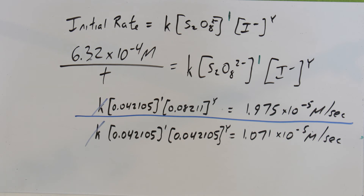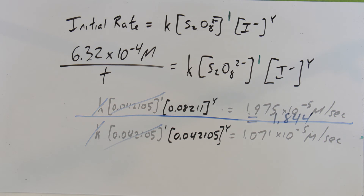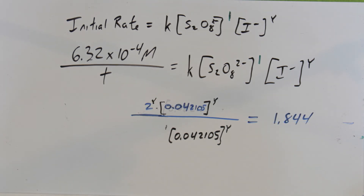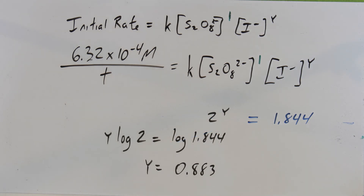We cancel things out as a ratio the same way as before: the rate constant goes, the persulfate concentration goes, and we're left with 2 to the y equals — but this time, notice it's not quite 2. This is what I meant earlier about experimental error. It's very important to average data over multiple trials. The y value here is not quite 1 — it's around 0.8 — which is off. There is no 0.8 reaction order, so it's probably 1. The data here is questionable, but with the full set averaged in, it ends up being first order.